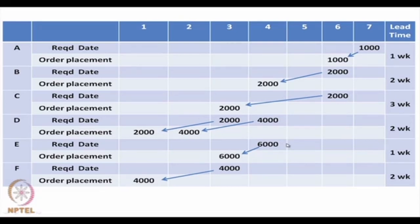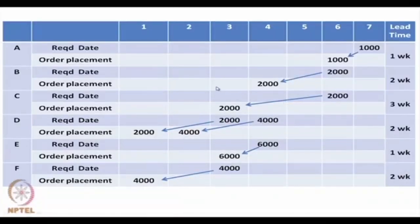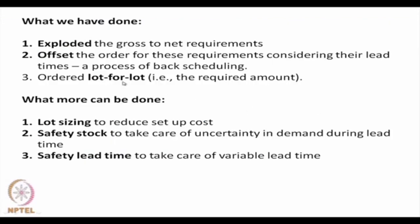For materials requirement planning, which is suited for dependent demand, one must first explore the product structure diagram — meaning we need a bill of materials — and we should also have a master production schedule to know when and how much of the final product is required. Once we know that, using the bill of materials we can find out the number of components required and from lead time knowledge we can determine when to place the order. The lot size differs from component to component and from day to day, which is why this is called lot-for-lot ordering.